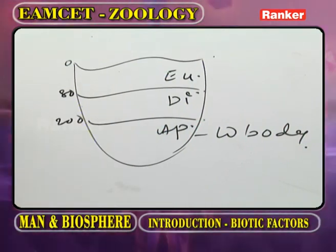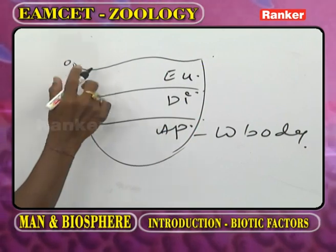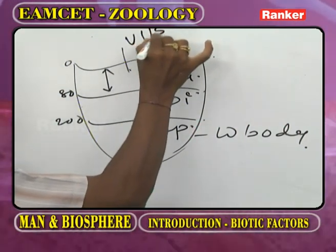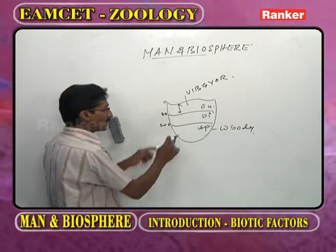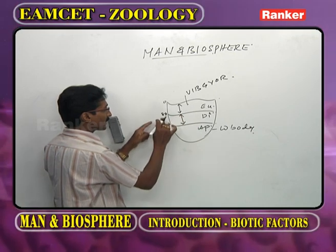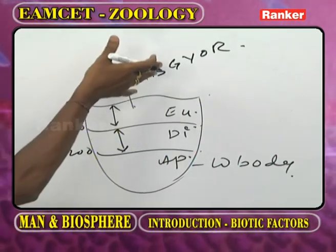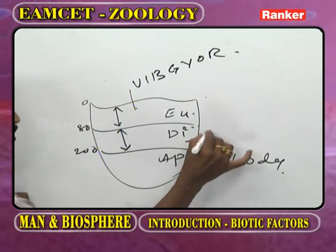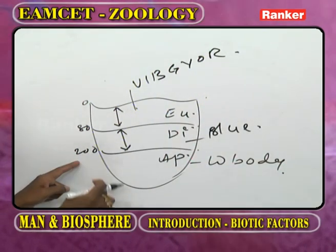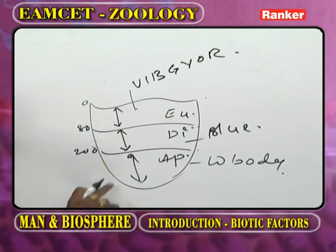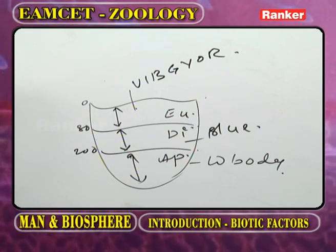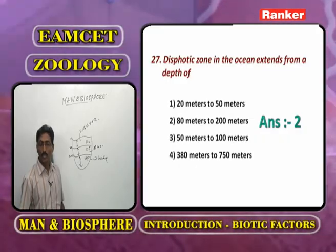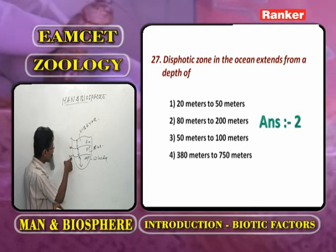In the euphotic zone (0-80 m), all colors of VIBGYOR are available. In the dysphotic zone (80-200 m), only a few colors are available, the best being blue. Beyond 200 meters is the aphotic zone, where there is no light and no oxygen. The dysphotic zone therefore extends from 80 to 200 meters.